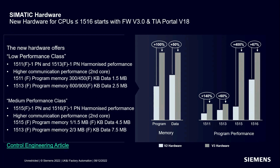In terms of availability, the 1511 and 1513 will be available to order from January — register on SIOS to get the update automatically when delivery becomes available. The 1515 and 1516 will be available from February. The 1517 and 1518 may stay unchanged; they typically have 6 MB working memory and 30 MB data memory, making them real powerhouses for automation. The 1515 microprocessor is seeing a 400% improvement in automation capabilities.